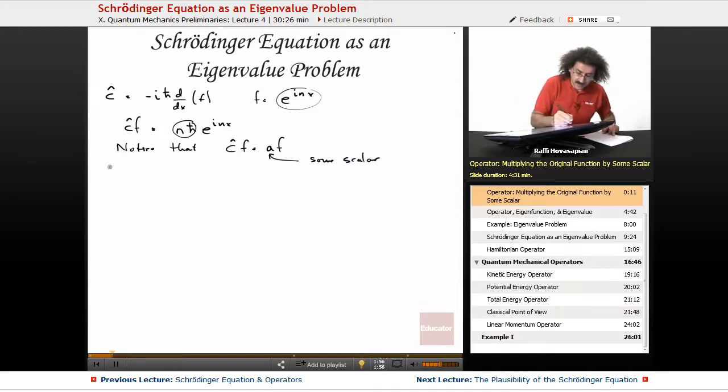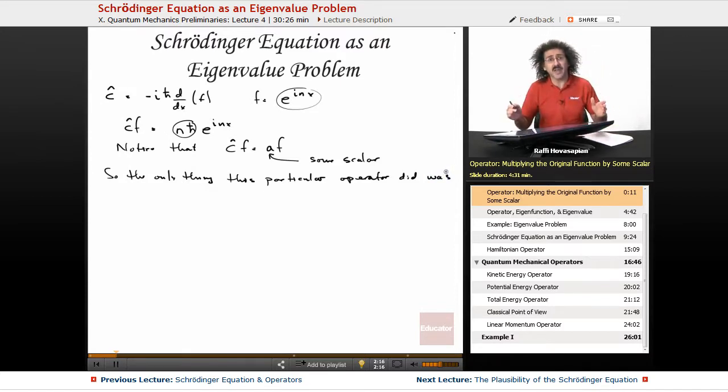So the only thing this particular operator did was multiply f by some constant. In other words, if my function were x squared, I may have ended up with 17x squared. That's it. I just multiplied x squared by a factor of 17.